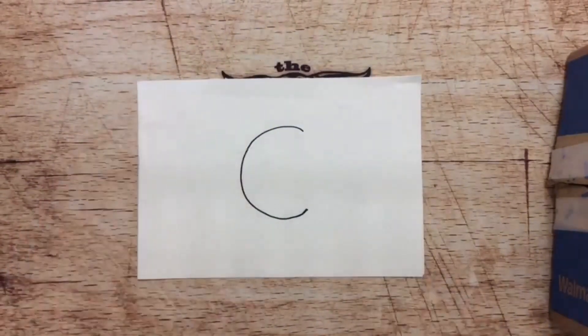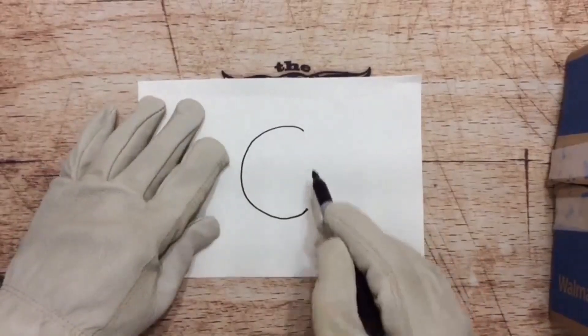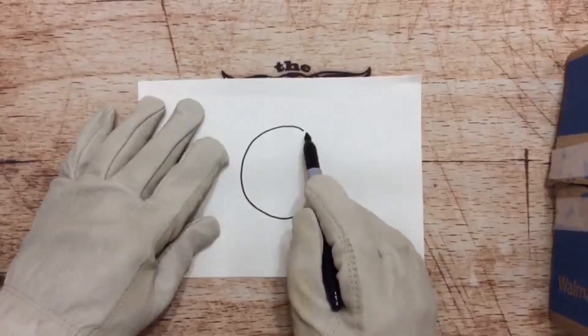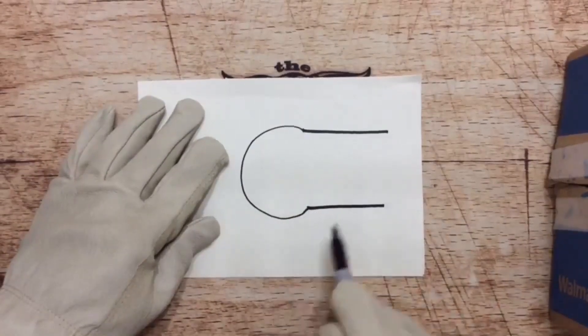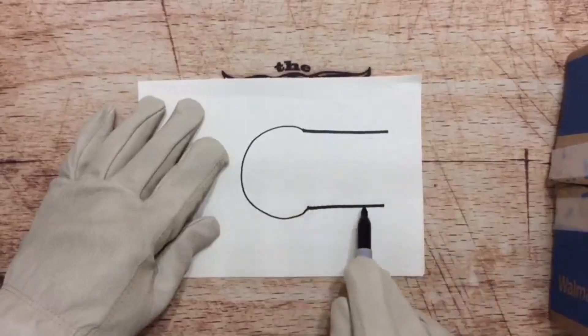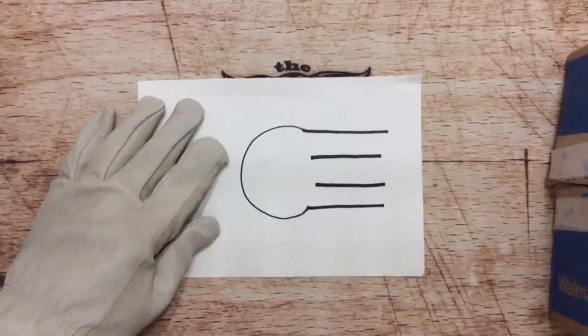Now, next thing you want to do is you want to do a couple of equal signs. So start over here on the right side ends of your letter C. You're going to do an equal sign here, like that. And then in the middle of that equal sign, we're going to do another equal sign. Boom, just like that.